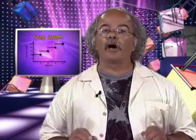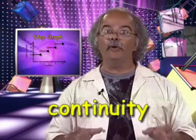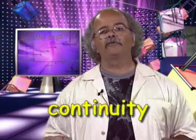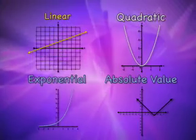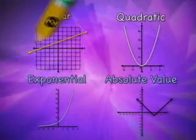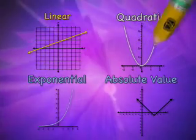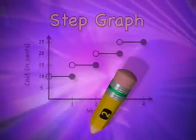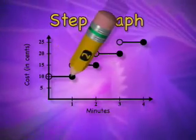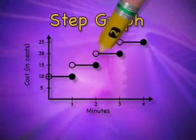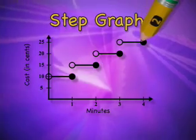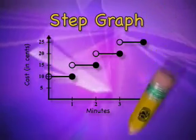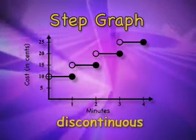This graph looks different than the other graphs because it has breaks in it, which brings up another property of functions: continuity. All the graphs we looked at so far are continuous — they don't have any breaks. If you were drawing these with a pencil, the pencil would never have to leave the paper. But in this function, you would have to draw individual little segments, lifting the pencil each time. A function that has breaks in it is called discontinuous.